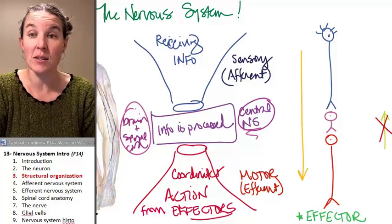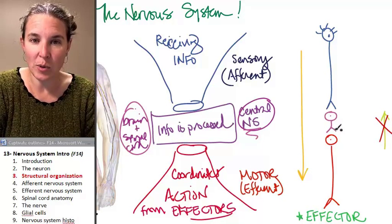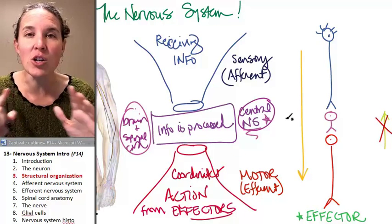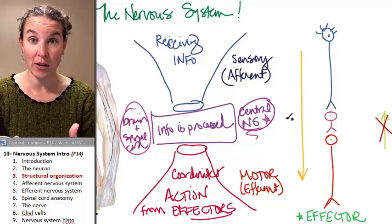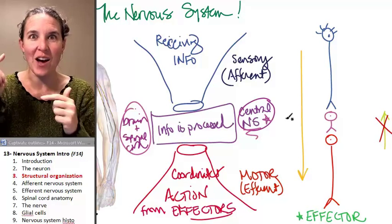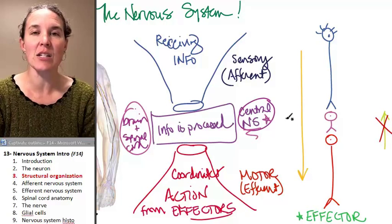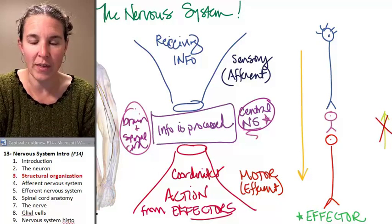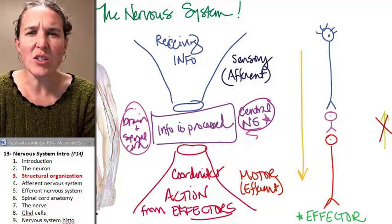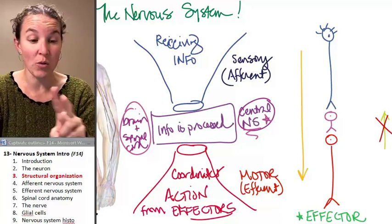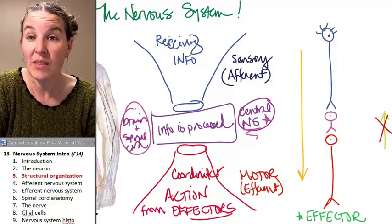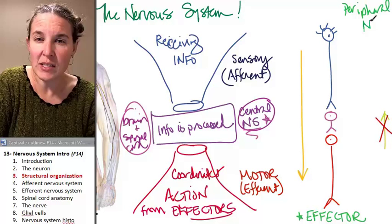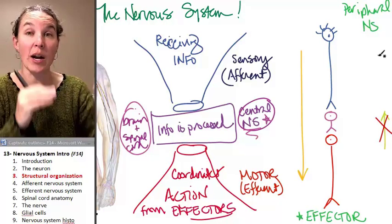Think about this. We already labeled this little purple area as the central nervous system. The central nervous system includes any neuron that stays in the brain and the spinal cord. So if a neuron is found in the brain or the spinal cord, it is considered part of the central nervous system. What's our alternative? If a cell is not part of the brain or the spinal cord, it's in the peripheral nervous system. That's not brain or spinal cord.